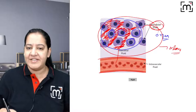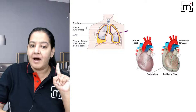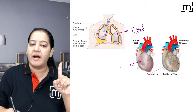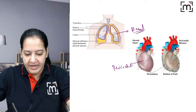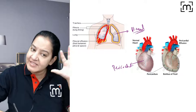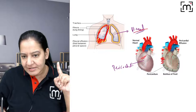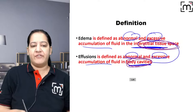If the fluid is accumulated in the interstitial space, it is edema. If fluid is accumulated in body cavities, it is effusion. In the human body we have cavities — surrounding the lungs is the pleural cavity, surrounding the heart is the pericardial cavity. Excessive fluid in the pleural cavity is pleural effusion; in the pericardial cavity it is pericardial effusion.